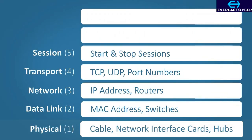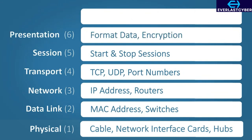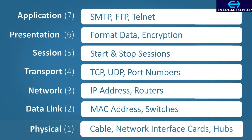Layer 5 is the session layer, which is responsible for establishing and terminating connections between devices. Layer 6 is the presentation layer and formats the data in a way that the receiving application can understand it. This layer is also able to encrypt and decrypt data if needed. Layer 7 is the application layer, and this is where the application and user communicate. Application-specific protocols are used here, such as SMTP if you are sending an email.